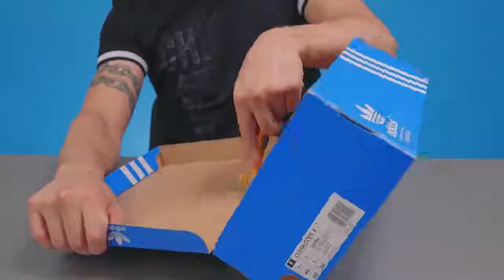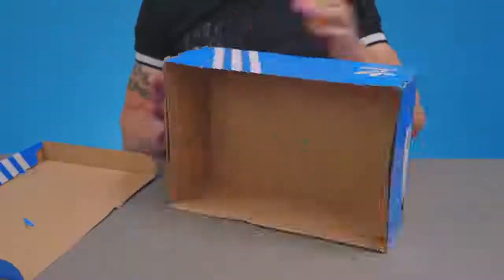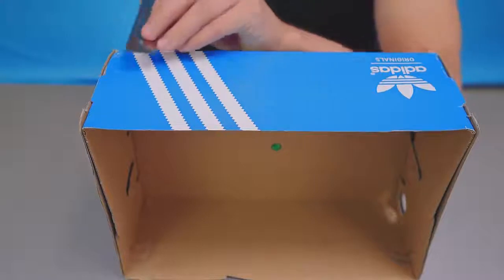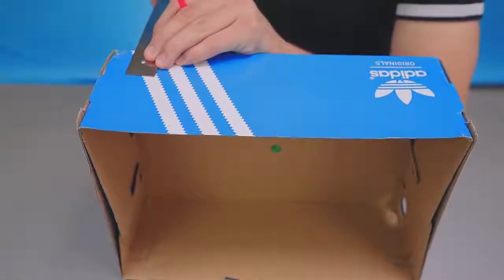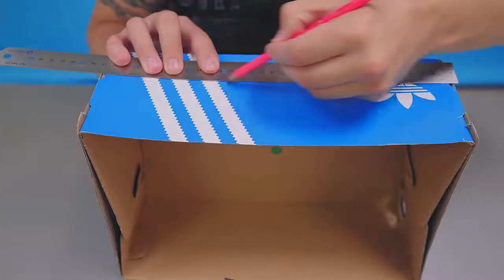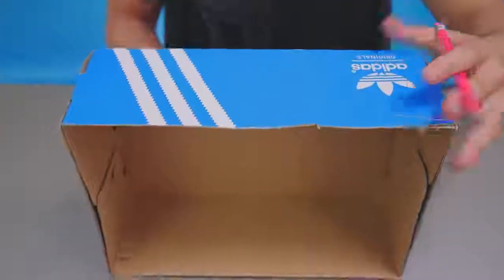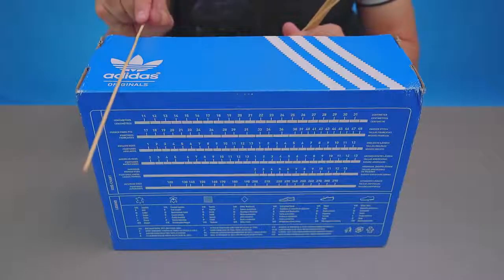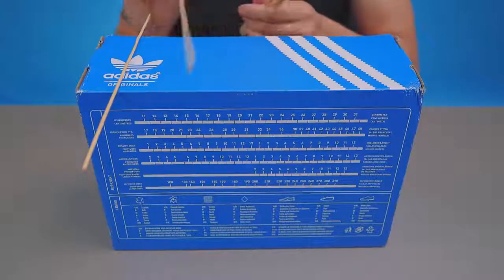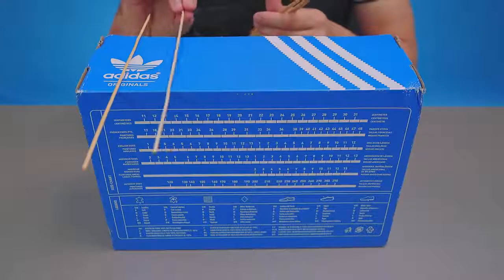Rip off the lid of the shoe box if it has one. Turn the box to one side, measure off a couple of inches and draw a line with the pencil along the box. Do the same on the other side. Now take six wooden sticks and use them to divide the two opposite sides of the box in equal parts.